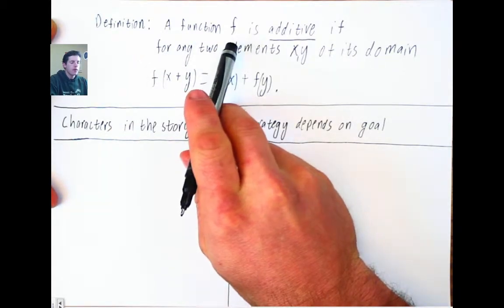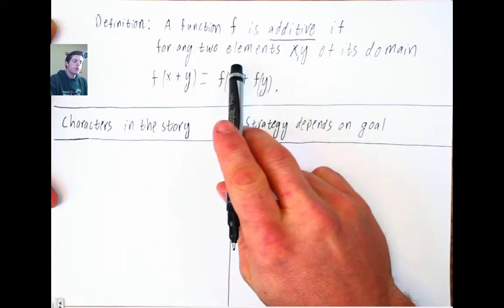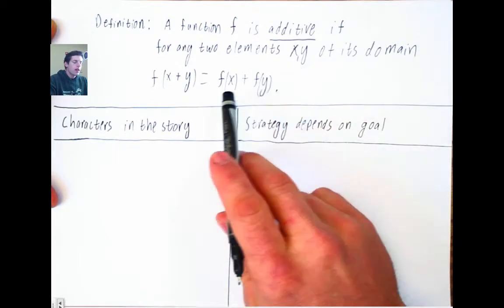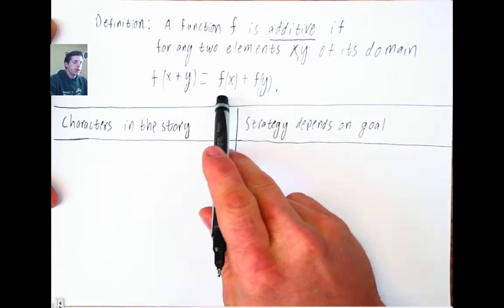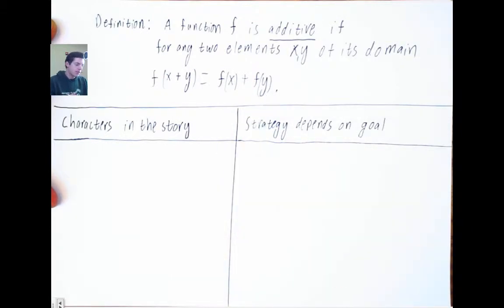Function f has this property of additivity, that is to say a function f is additive, if for any two things in its domain, we'll call them x and y, f of x plus y is equal to f of x plus f of y. Now that might not have much meaning to you right now, but that's the idea of going through these exercises, to give that a bunch of meaning to you.